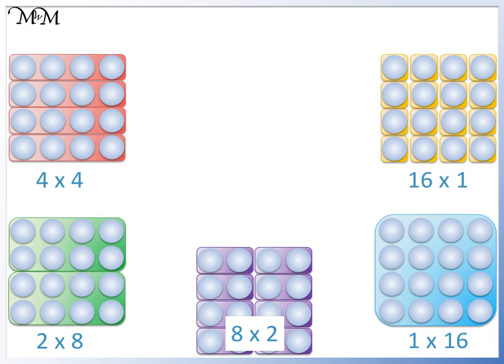These are the different ways that we could group 16 counters. And therefore, these are also the ways that we can multiply two numbers to make 16.